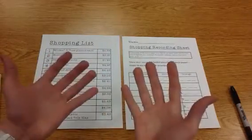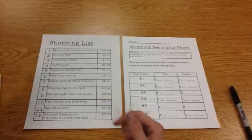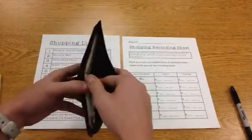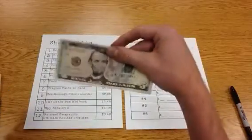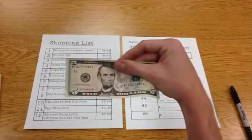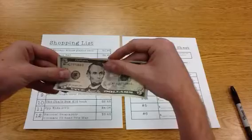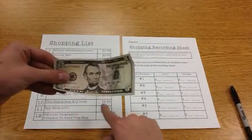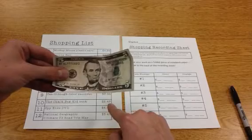But I have a problem, and here's that problem. When I looked inside my wallet, I didn't bring any coins. The only thing that was in there was a bunch of $5 bills. And when I look at my things that I want to buy, some of them don't cost that much. Like if I look at the Chalkbox Kidbook, it's only going to cost me $2.49.